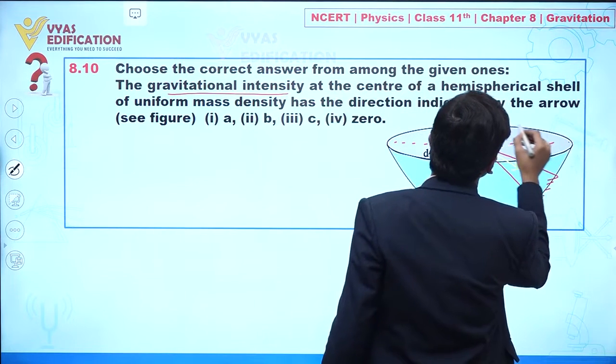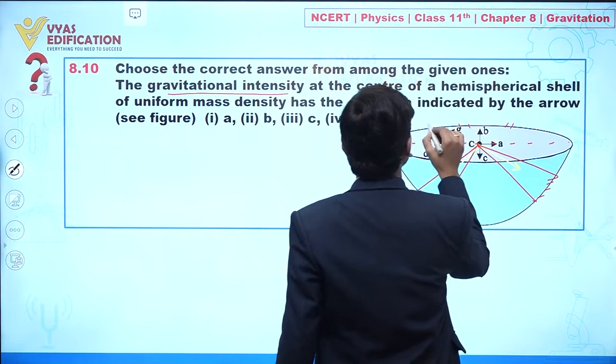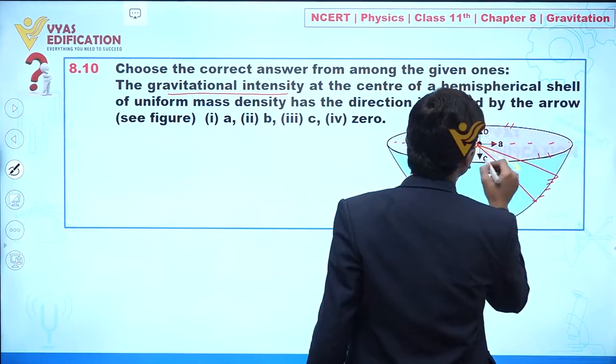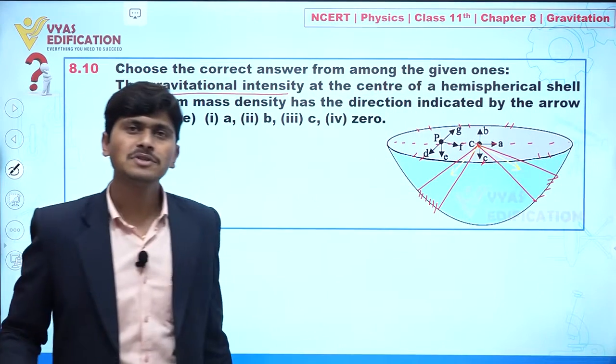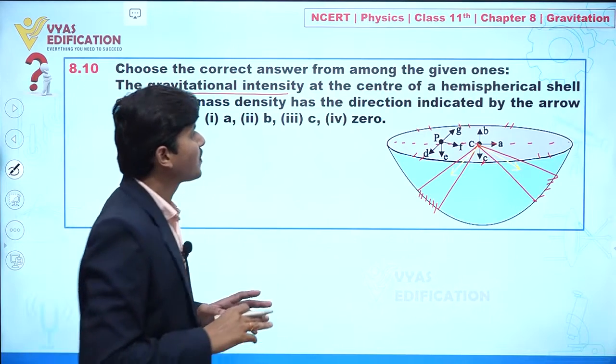So definitely we can say if this is the half part of the hemisphere, the electric field due to this half part will be cancelled out by the electric field due to this half part. It means we can say B and C is not the correct answer. Now we have only two options.